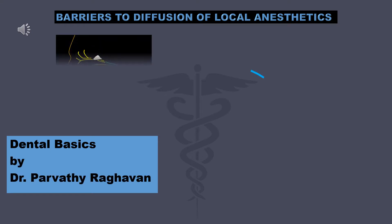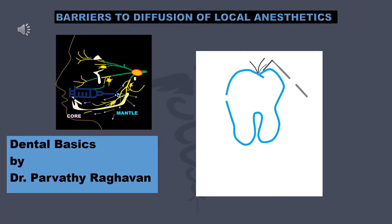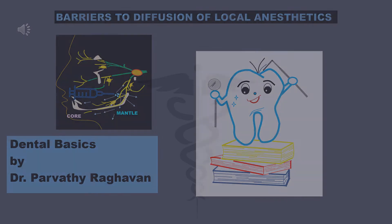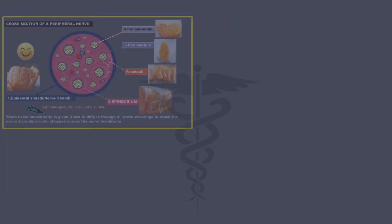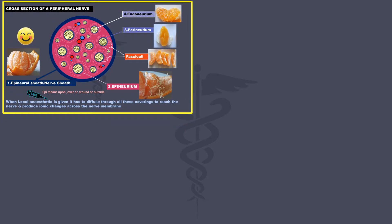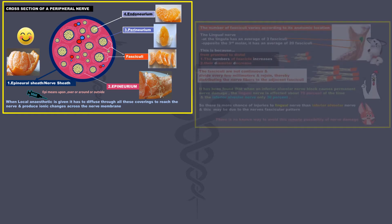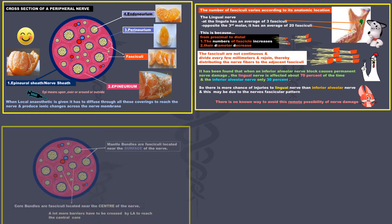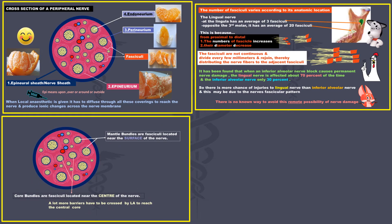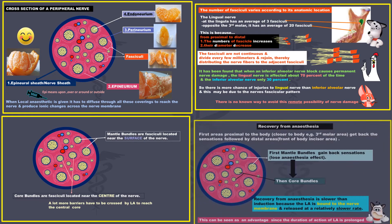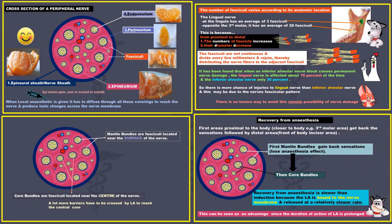Let us find out the structures inside a nerve that influence the diffusion of local anesthetics. We are going to look at the cross-section of a peripheral nerve and how diffusion of LA occurs through the different layers inside, how nerves are formed by different numbers of fasciculi, what are the mantle bundles and core bundles and their location, and finally how the structure of a nerve influences its recovery from LA.